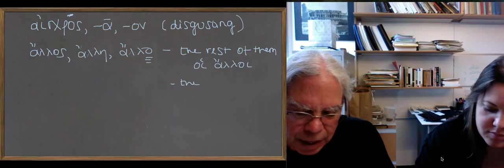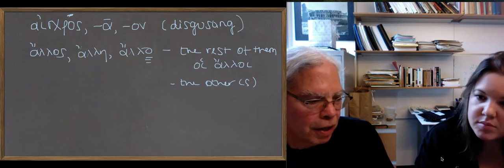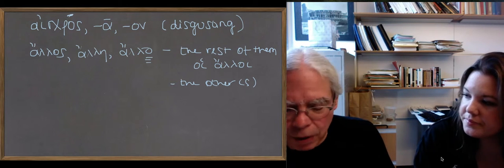There's the preposition aneu, without, which governs the genitive. It's a separation genitive. Apart from or without is what it means.